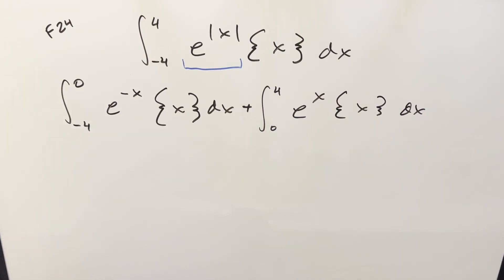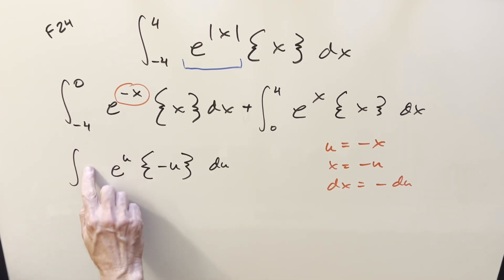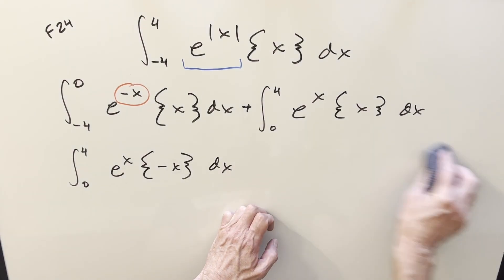Both these integrals are really similar. Maybe we can get them to be the same. I can do a u substitution. If I do u equals negative x for a u sub, then x is minus u and dx is minus du. The upper bound still is 0, this becomes a 4. This becomes e to the u, fractional part of minus u. I'll use the minus sign to flip the bounds around, so it's going from 0 to 4. Now we've got the same bounds and basically the same thing. I can change the variable to x on this definite integral, just so we can work with this other one and see them side by side.